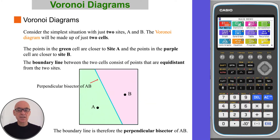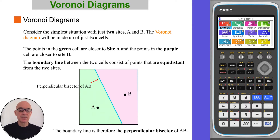Consider the simplest situation with just two sites, A and B. The Voronoi diagram will be made up of just two cells. The points in the green cell are closer to site A, and the points in the purple cell are closer to site B. The boundary line between the two cells consists of points that are equidistant from the two sites. The boundary line is therefore the perpendicular bisector of AB.